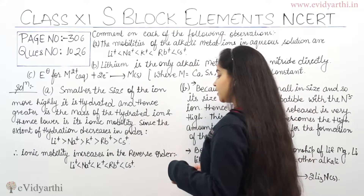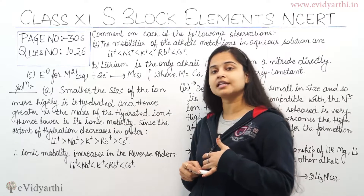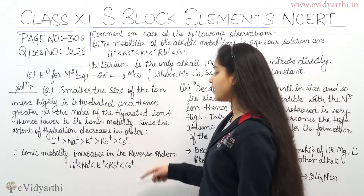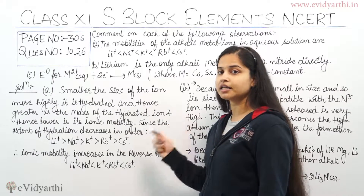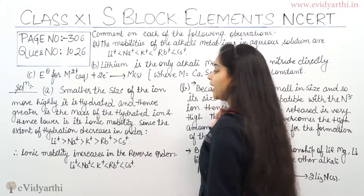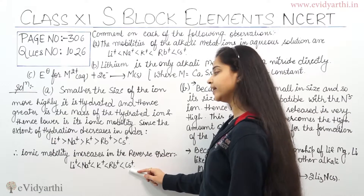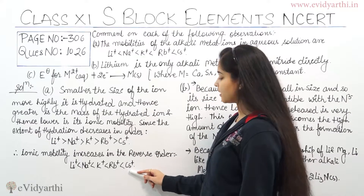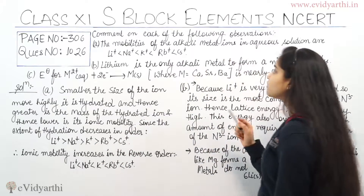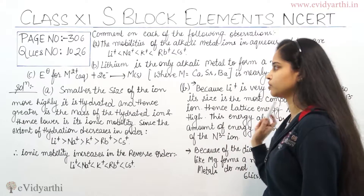Therefore, ionic mobility increases in the order Li⁺ < Na⁺ < K⁺ < Rb⁺ < Cs⁺. This is the ionic mobility order of alkali metal ions in aqueous solution, and I hope this order is now very clear to you all.